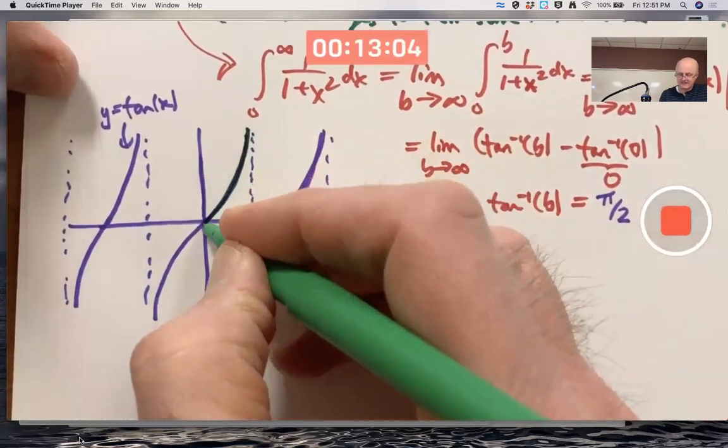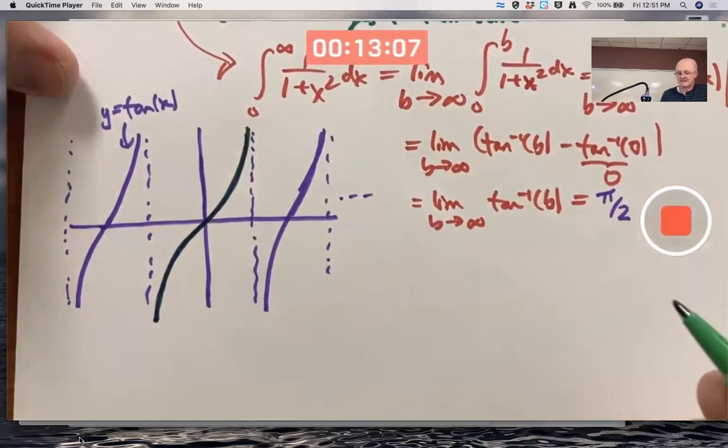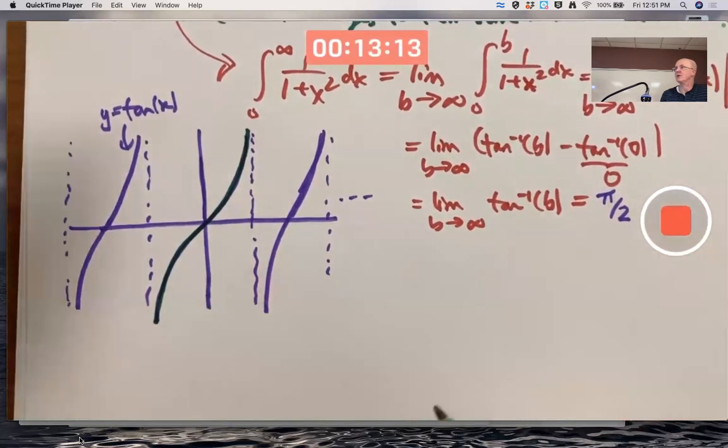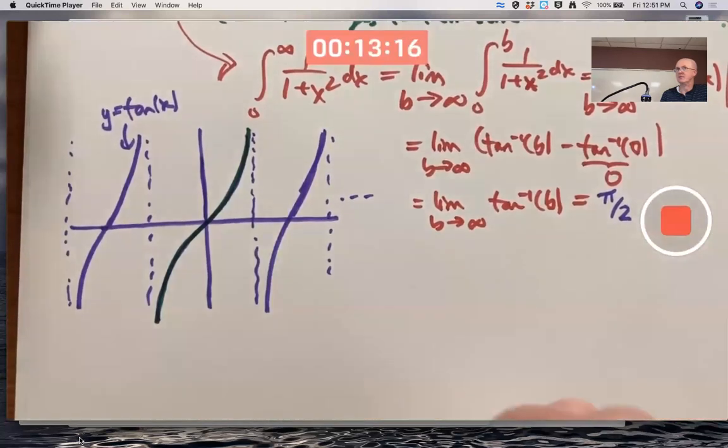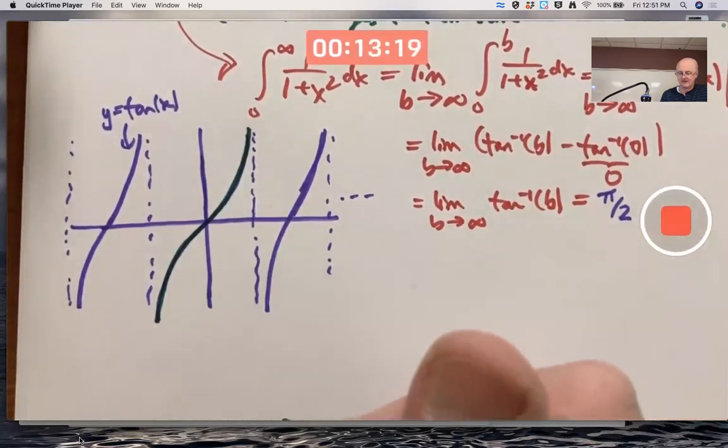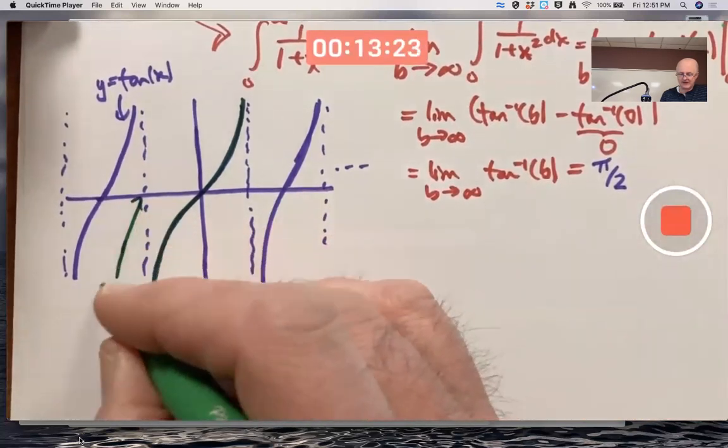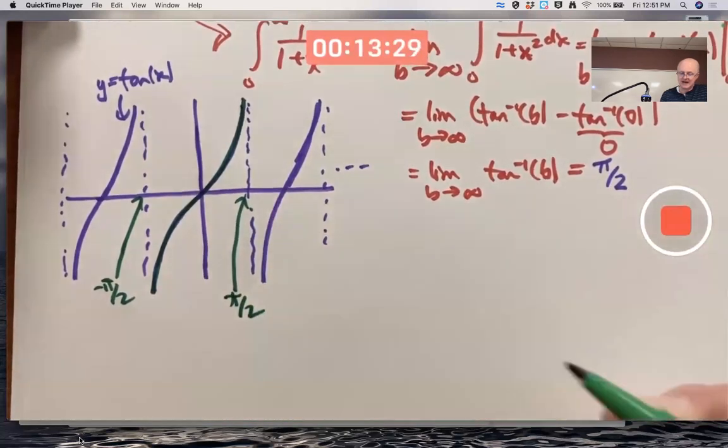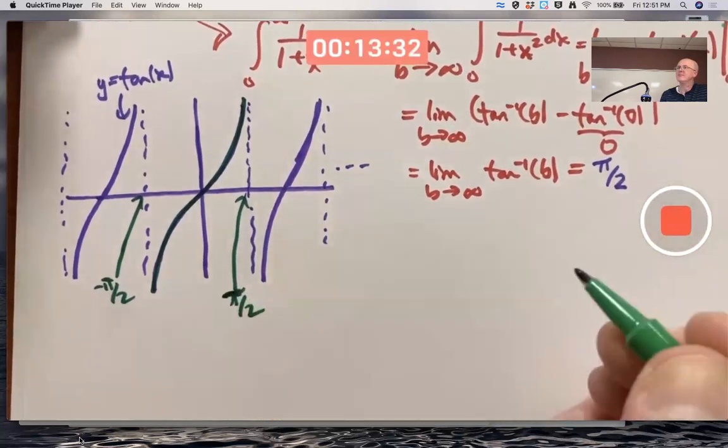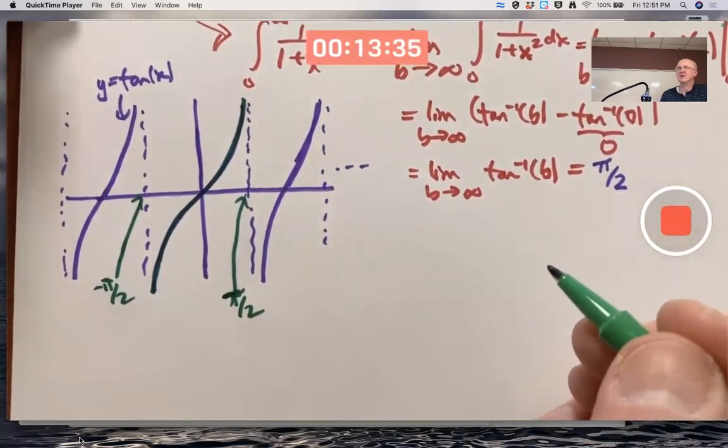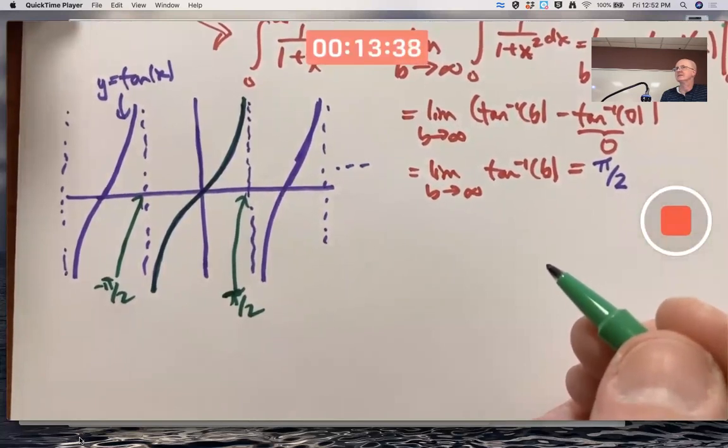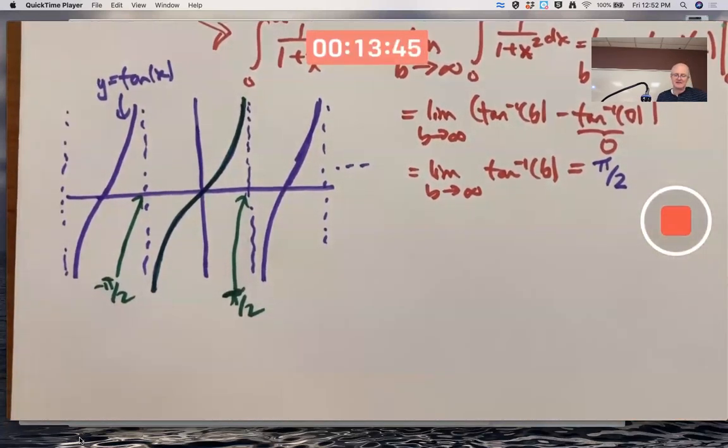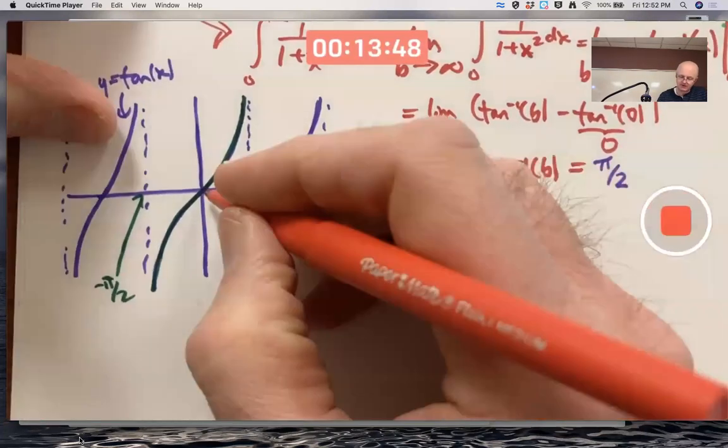However, if we consider any one of these pieces like this piece, just that piece and ignore everything else, and in fact, restricting the domain, that one piece is one-to-one. No horizontal line goes through that piece more than once. What's the domain of this piece? It goes from negative pi over 2 to positive pi over 2. Is that a coincidence? No, it's not. Pi over 2 radians, by the way, as an angle measure, corresponds to 90 degrees. It's not a coincidence because, remember also,